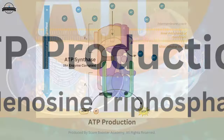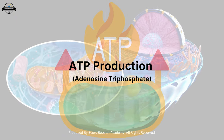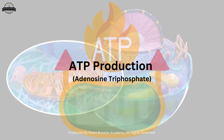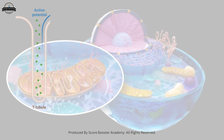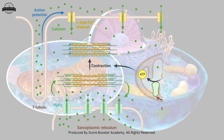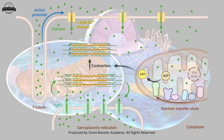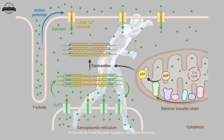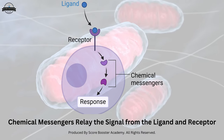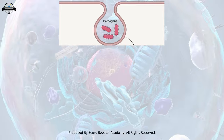Although ATP production is the mitochondria's primary role, they are involved in several other essential functions. Mitochondria help regulate calcium levels within the cell, which is crucial for various cellular processes, including muscle contraction and cell signaling.